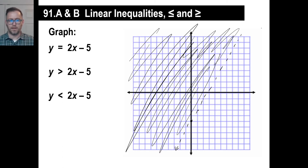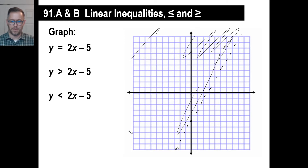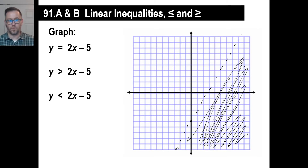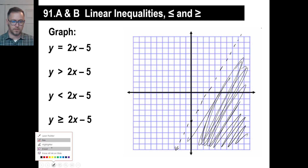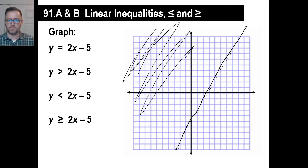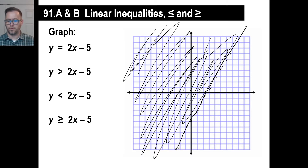How about if it's y is less than that? You will not be surprised to learn it won't be above — it will of course be below, on the bottom side. That's y is less than 2x minus 5. If y is greater than or equal to, you would include the line itself — a solid line — and then everything above that. And of course the last one, less than or equal to, would include the line and everything underneath it.